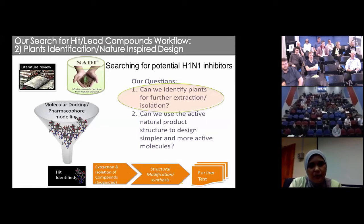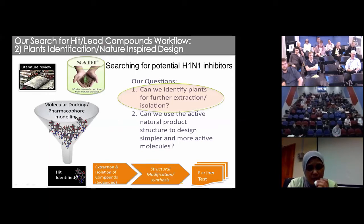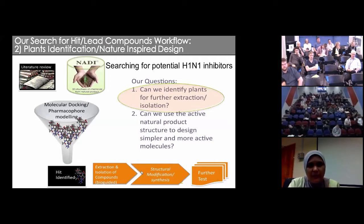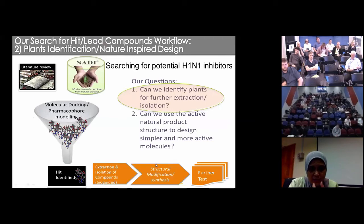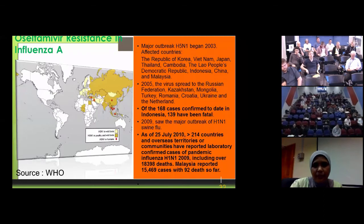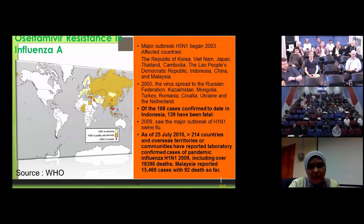We carefully selected the hits in terms of how they bind, then clustered the compounds by the plants that contain them, and proceeded to extraction and isolation using bio-guided principles. Once we found the actives, if we wanted to use them for structure modifications we could do that, but we still have to do further tests to validate our results. We actually applied this to working on influenza virus.